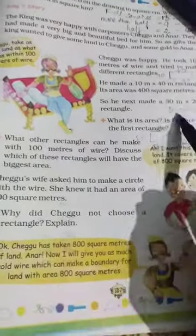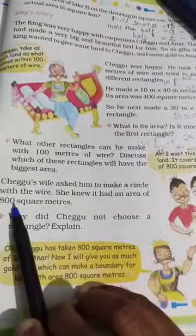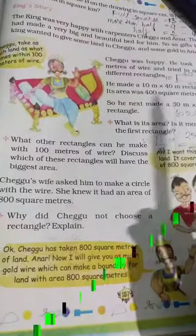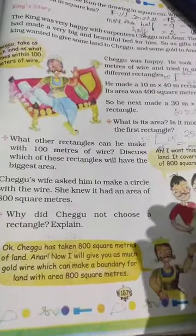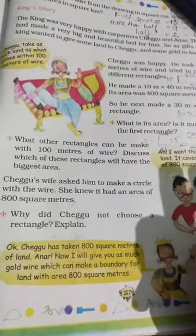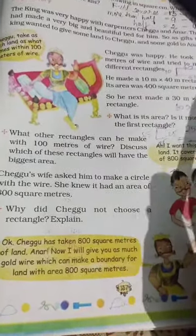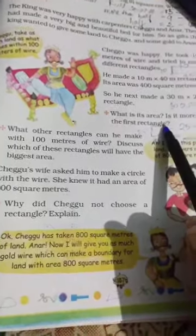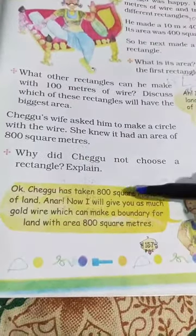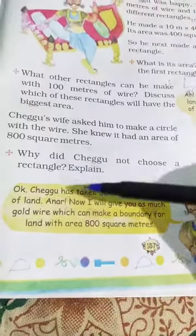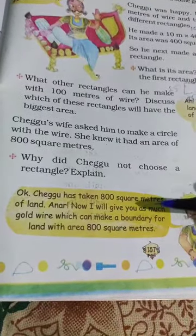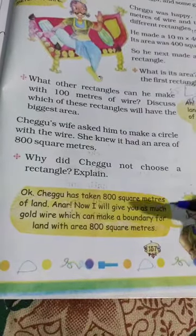So when you compare a square, a rectangle, and a circle, the circle will have the bigger area. Even if the perimeter is the same for all three, the area of the circle is going to be the bigger one. So why did Cheggu not choose a rectangle? Obviously, it's because the circle covered more area than the rectangle or the square.